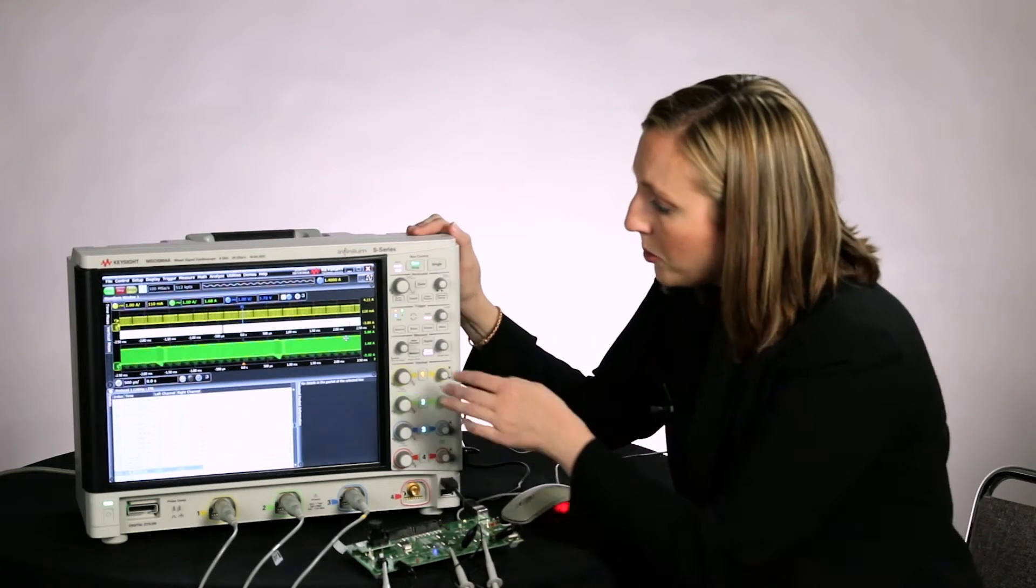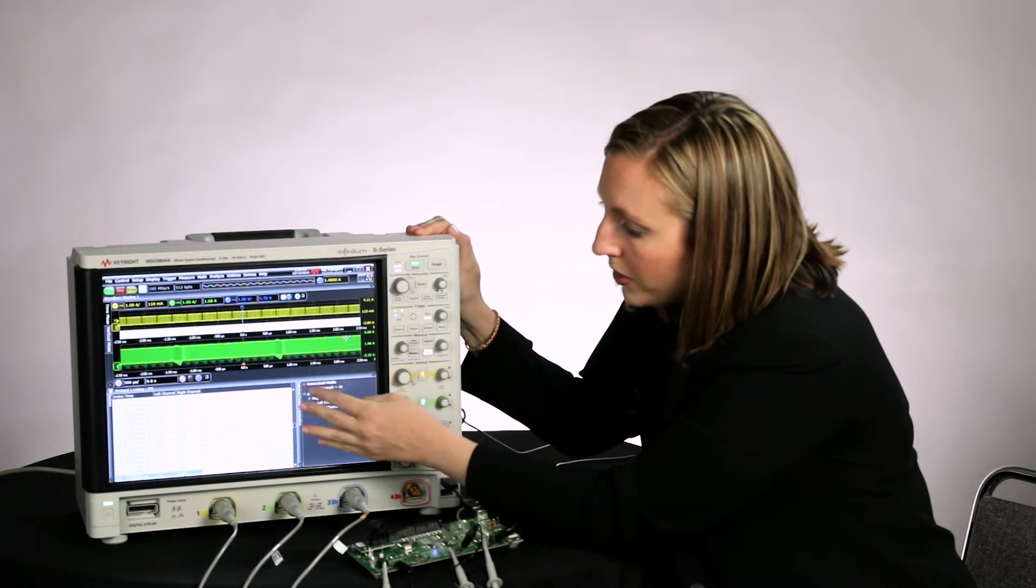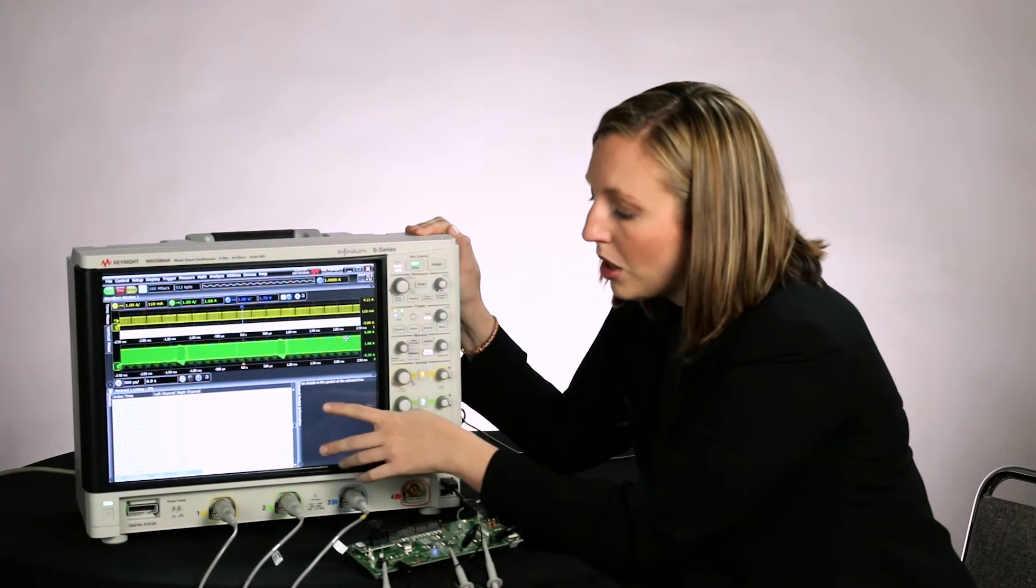So you can see here my signals are still displayed, and now I have the list review that shows all I Squared S packets.